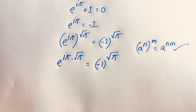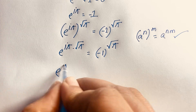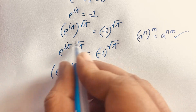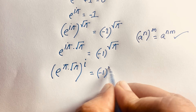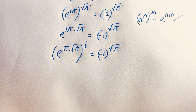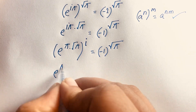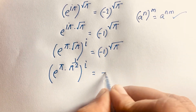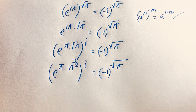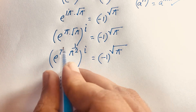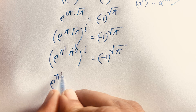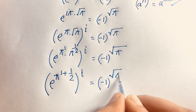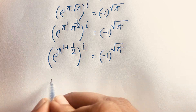Applying this law, we get e to the power i·pi times square root pi is equal to minus one to the power square root pi. Now I can write pi times square root pi as pi times pi to the power one over two, which equals pi to the power one plus one over two.